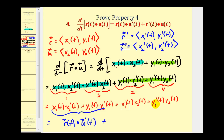Looking at the sum of the last two products: x sub one prime of t times x sub two of t is the x component of r prime times the x component of u, and y sub one prime of t times y sub two of t is the y component of r prime times the y component of u. So that gives us r prime of t dotted with u of t. That completes the proof of property four. In the next video we'll verify property five. Thank you for watching.